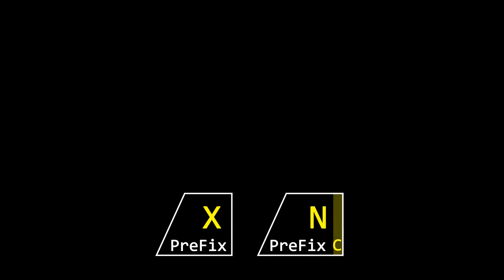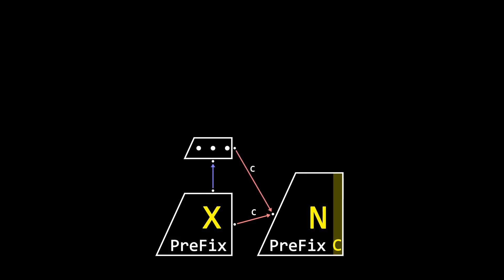Note that the current host string's node is X. When adding a character C, a new node should be added. We define the new node as N. From X, jump along links. If there is no transition with the value C, create a new transition from the current node to N.